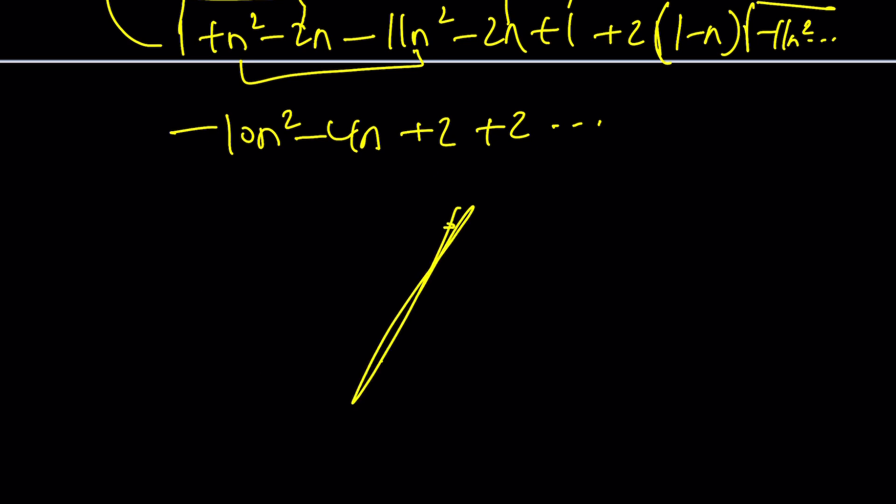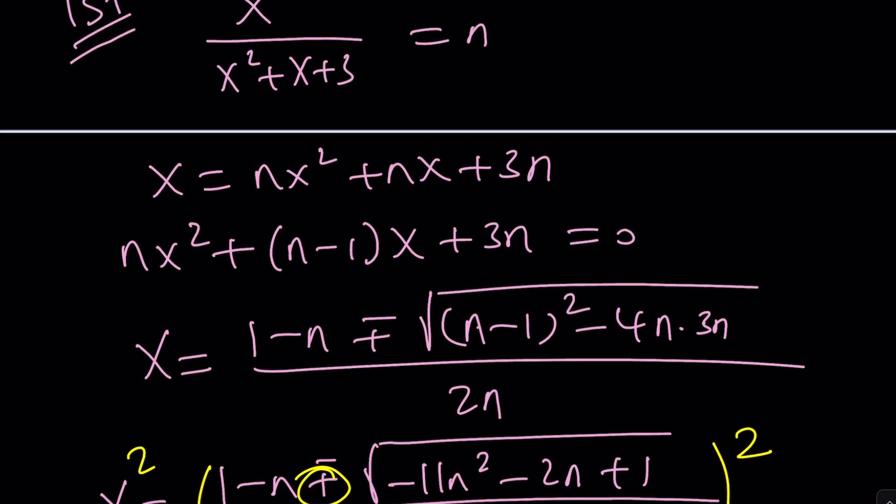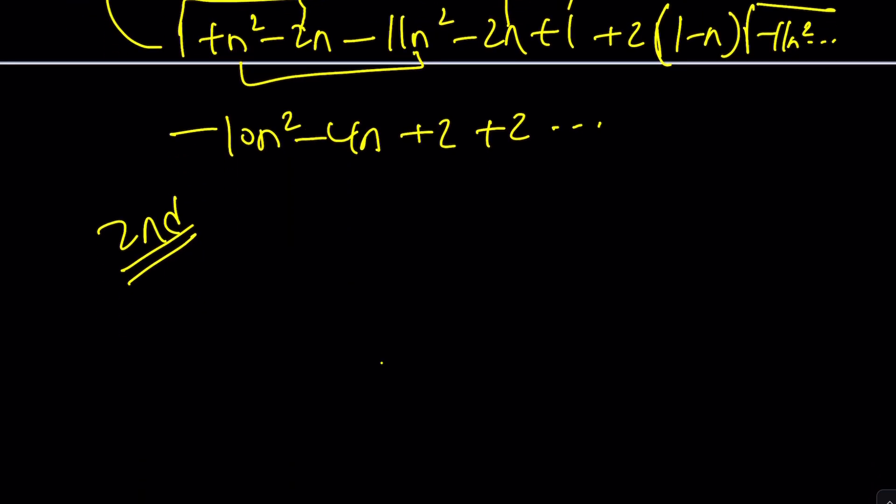So, for my second method, I'm going to go ahead and do something differently. Obviously, that wouldn't be second otherwise. So, we start with this. And I want to go ahead and cross multiply again.